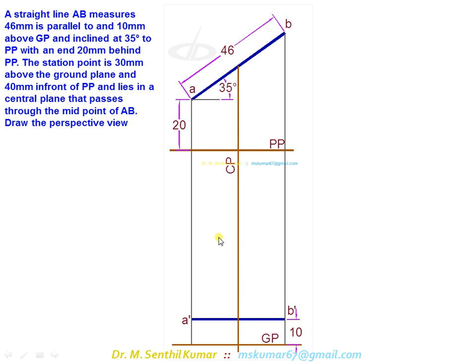Station point is 30mm above, so from here 30mm above, and 40mm in front. So from here mark 40mm in front and 30mm from here as S dash.